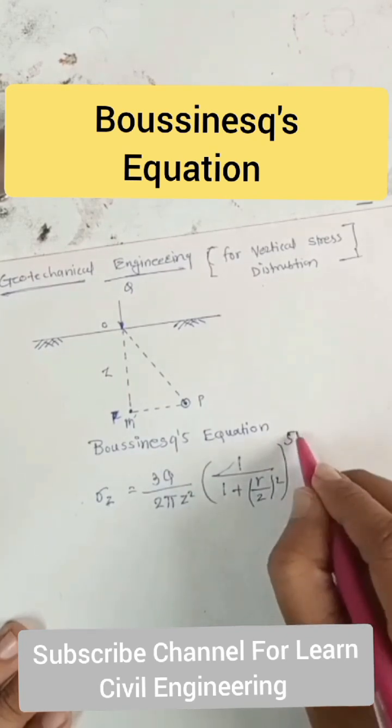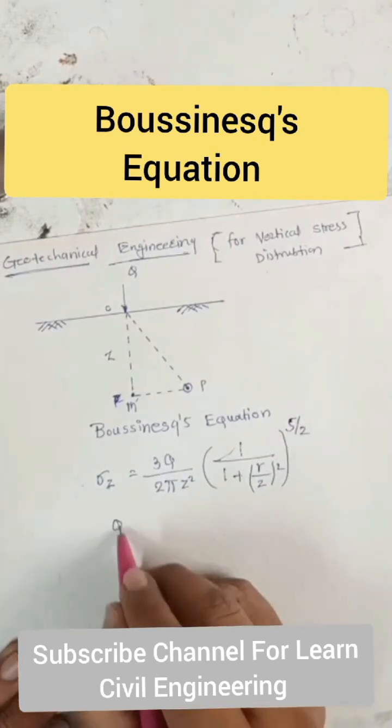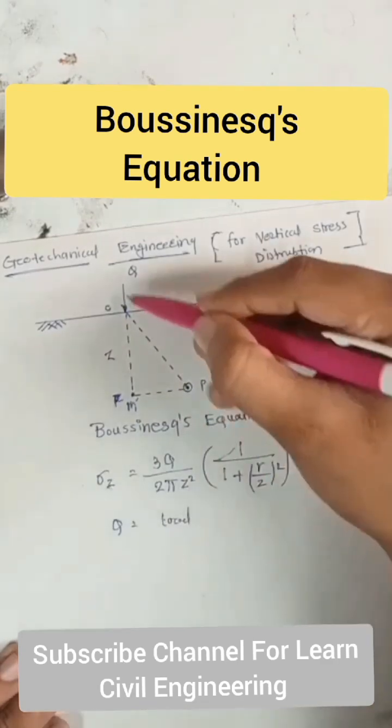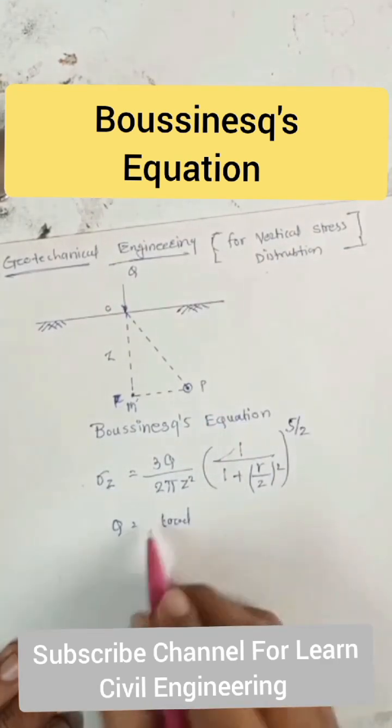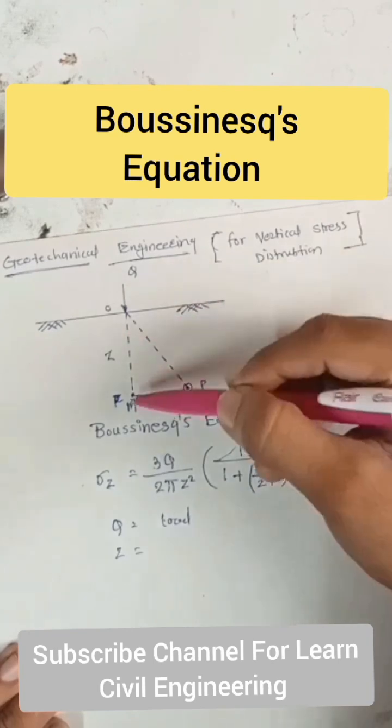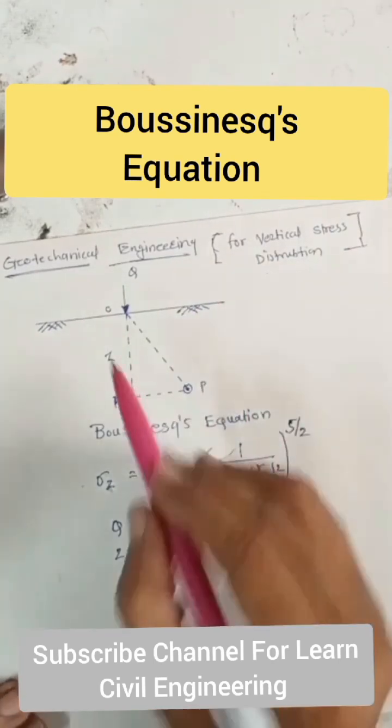What is q? q is the total load acting on point O. And z is the required depth where we are calculating vertical stress due to point load q at point M.